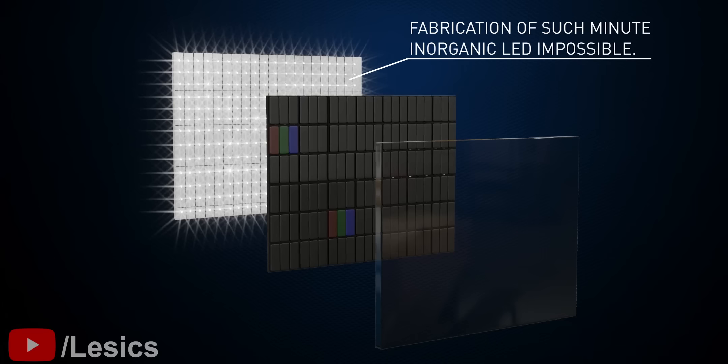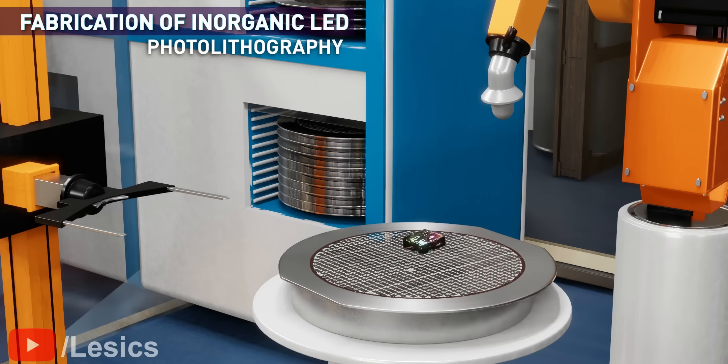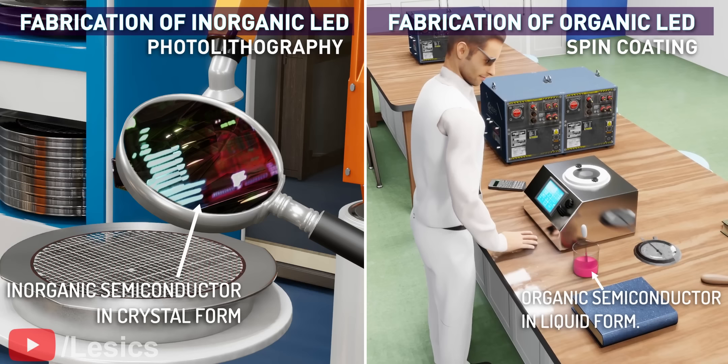However, the issue is that fabrication of such minute LEDs in the range of micrometers is not practical. Due to the issue of surface irregularities and their solid nature at room temperature, they cannot be miniaturized into micrometer ranges. This is why organic LED comes into the picture. They can be fabricated as small as 6.3 micrometers.